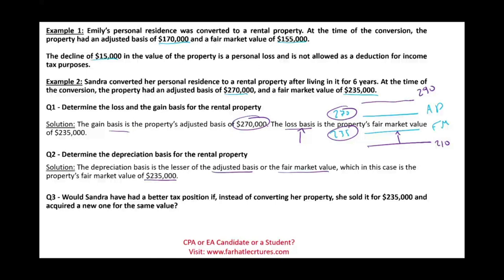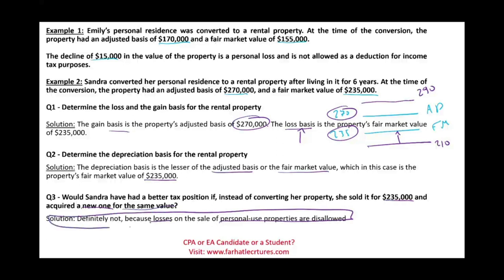Would Sandra have been in a better tax position if she had sold for $235,000 and acquired a new property at the same value instead of converting? No — losses on the sale of personal use properties are disallowed either way. So this is what you need to know about personal use property, and it's also a good review of the gift tax dual basis rules.